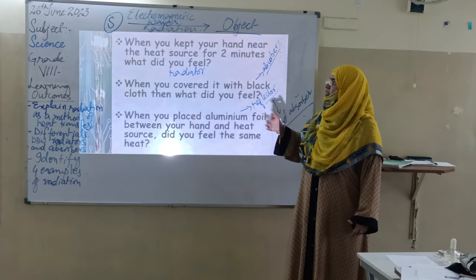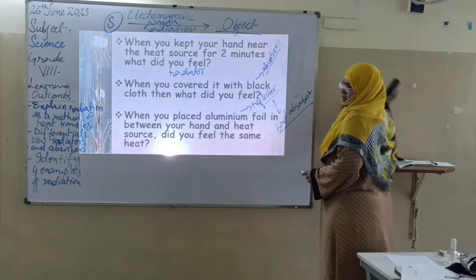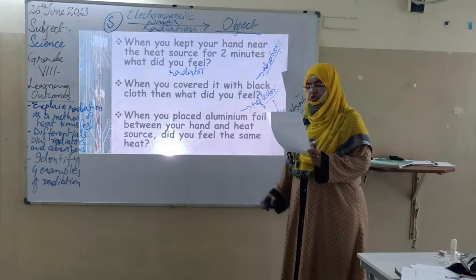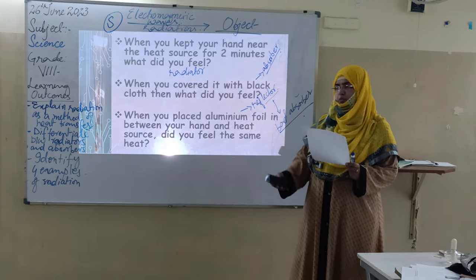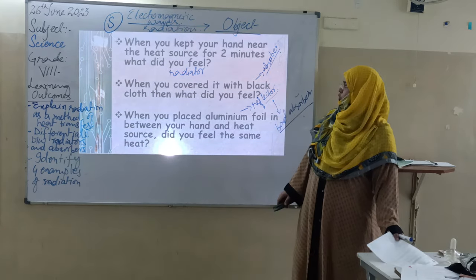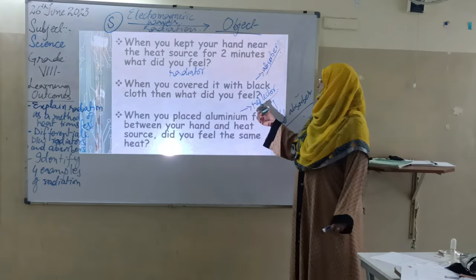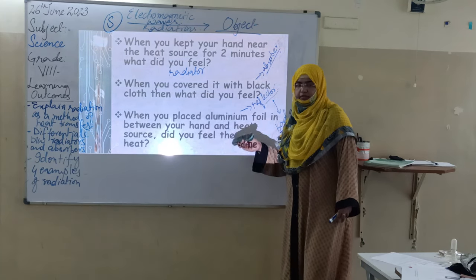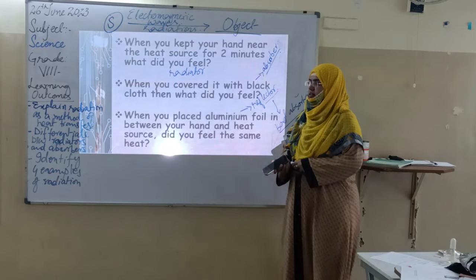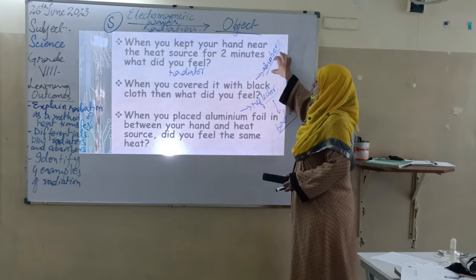In your worksheet it says: explain what difference you felt in steps 3 and 4, and identify the terms used for black cloth and aluminum foil. You have written that black cloth is known as an absorber and aluminum foil is known as a reflector. Any questions? Are you clear about the concept of good absorbers and bad absorbers — absorbers and reflectors? In the next part, I am going to ask you a few examples from daily life.